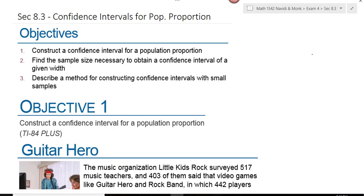Section 8.3 is Confidence Intervals for Population Proportions. Remember, the population proportion is P, the sample statistic is P-hat. The way we calculate P-hat is we look at the number of successes divided by the number of trials.